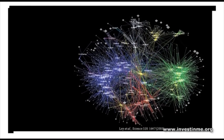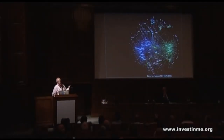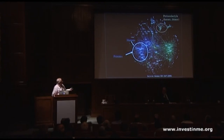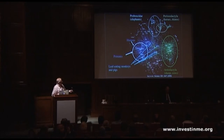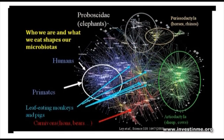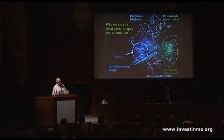By sequencing the microbiomes of various animals, we've come to conclusions about why certain species have different microbiotas. This network analysis by Ruth Ley in Jeffrey Gordon's group in St. Louis maps microbiota similarity across animal species: humans and primates cluster together, horses and rhinos form their own cluster, sheep and cows another, lions and bears a carnivore group. What this says is that who we are and what we eat shapes our microbiota — both diet and our genetics are major factors determining its makeup.